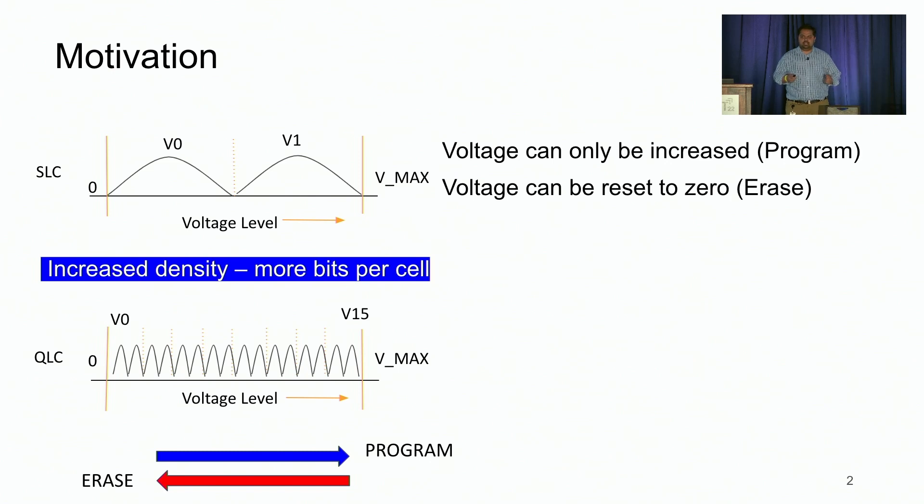A voltage in a cell can be monotonically increased from a lower value to a higher value. This operation is called a program operation. The voltage cannot be reduced, but it can be reset to zero, and this operation is called an erase operation, and it's a costly operation in terms of endurance of the SSD drive.